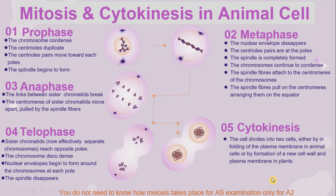In step five, cytokinesis, the cell divides into two cells — either by infolding of the plasma membrane in animal cells, or by formation of a new cell wall and plasma membrane in plant cells. Please remember that you do not need to know how meiosis takes place for the AS examination. This is only for A2.